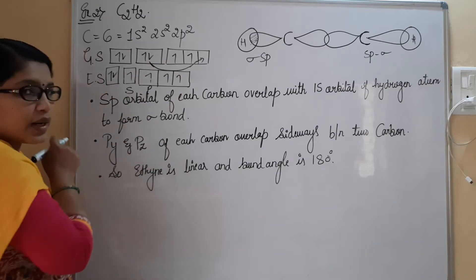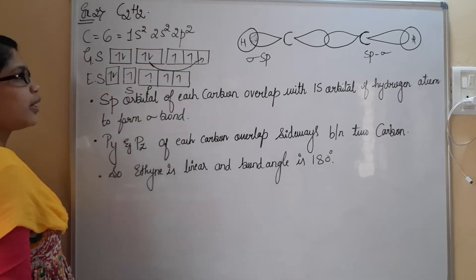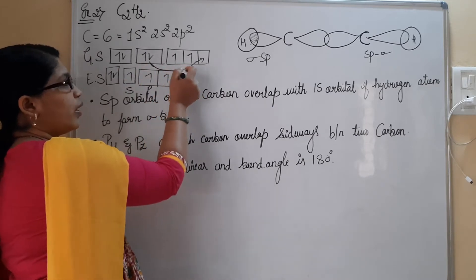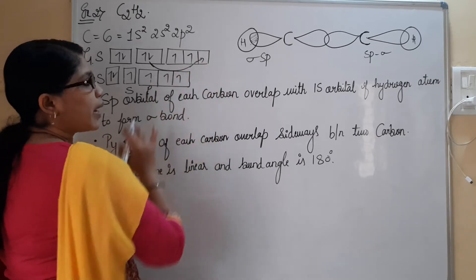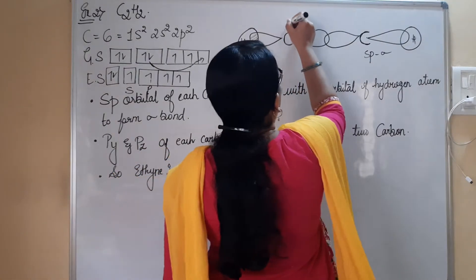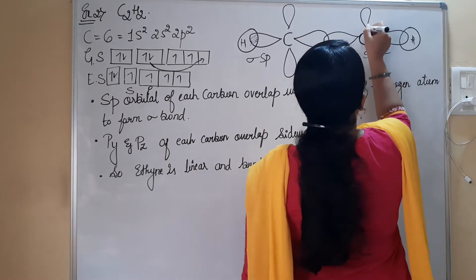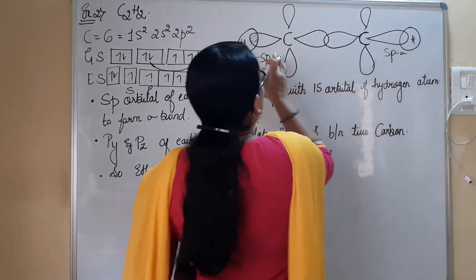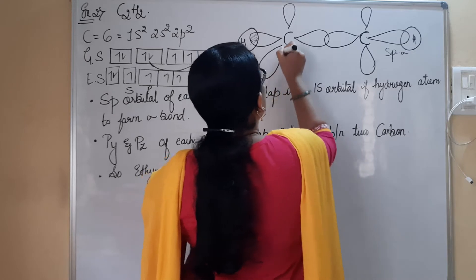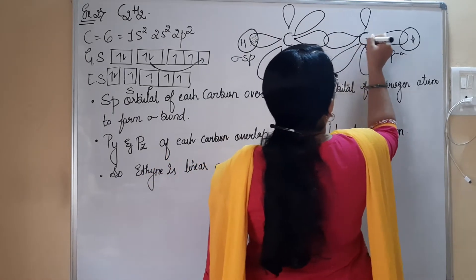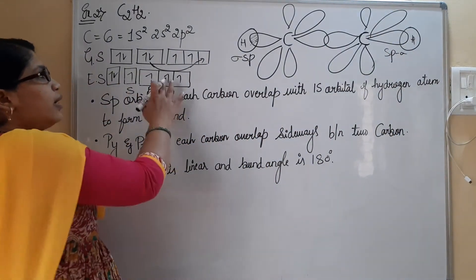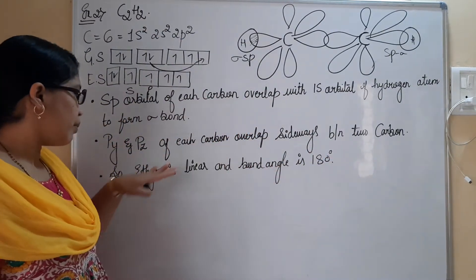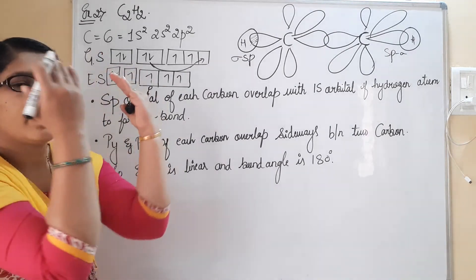The configuration I wrote is for one carbon atom only. Since we have two carbon atoms, both have their own PY and PZ orbitals. These PY and PZ atomic orbitals of the two carbon atoms combine in sideways overlapping. The PY orbital of one carbon combines with the PY orbital of the other carbon, and similarly the PZ orbitals also combine sideways to form pi bonds.